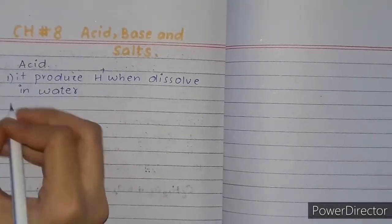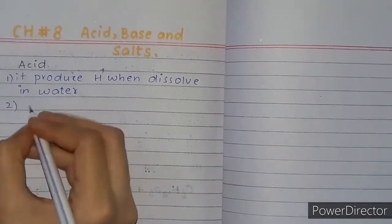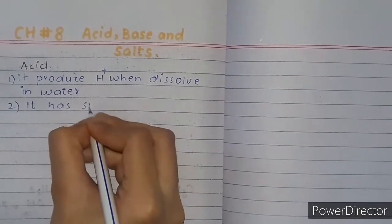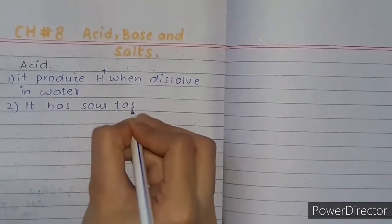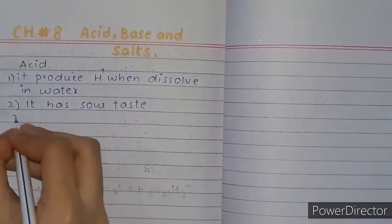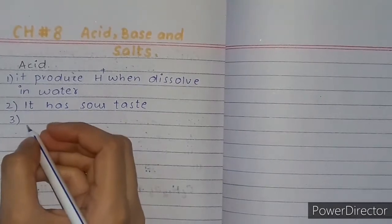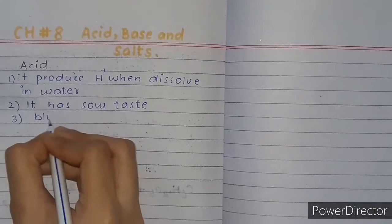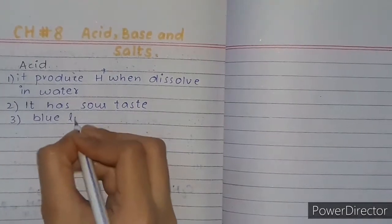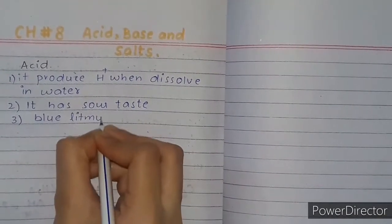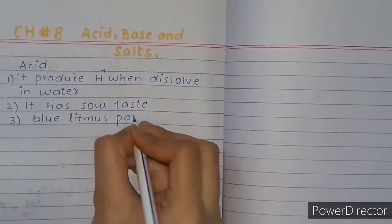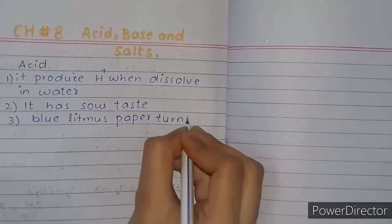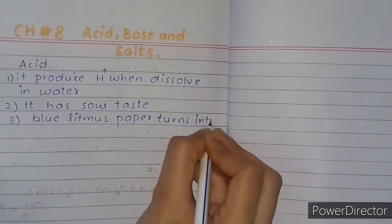This is the first property. Second, it has sour taste. Third property is blue litmus paper turns into red.